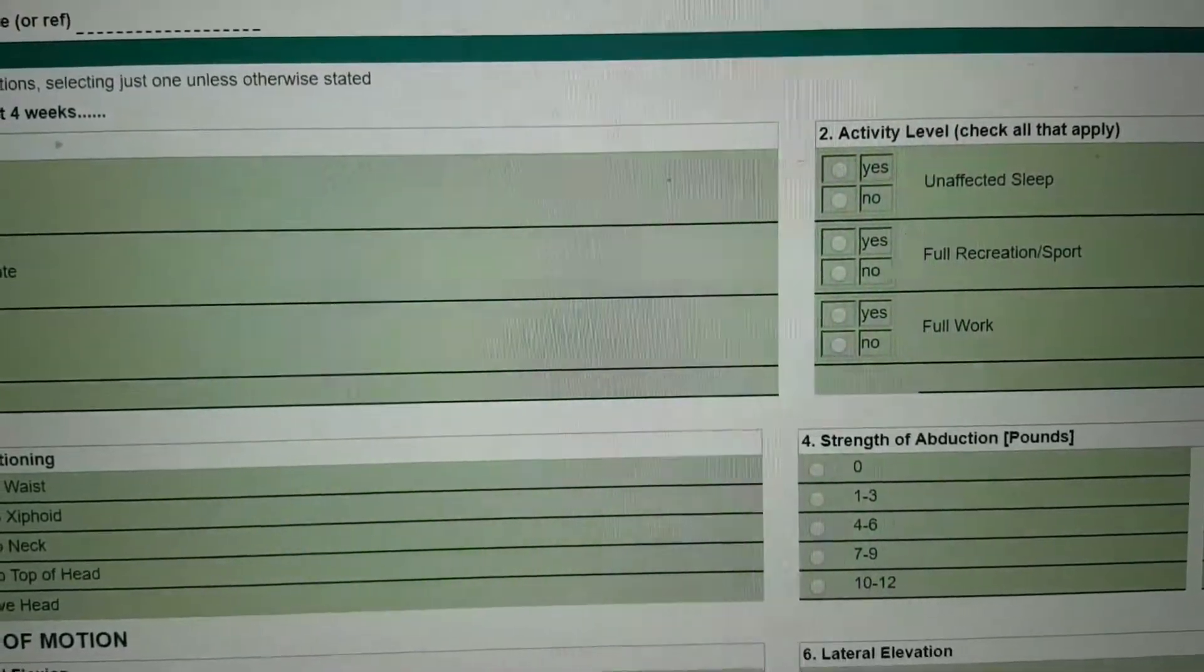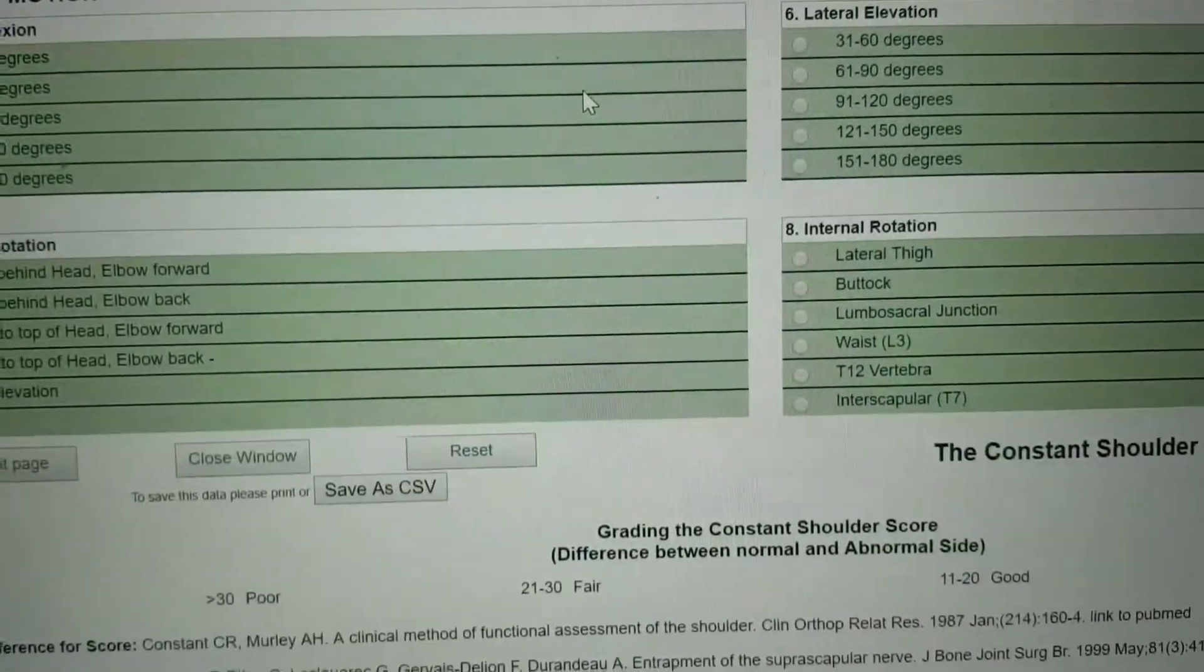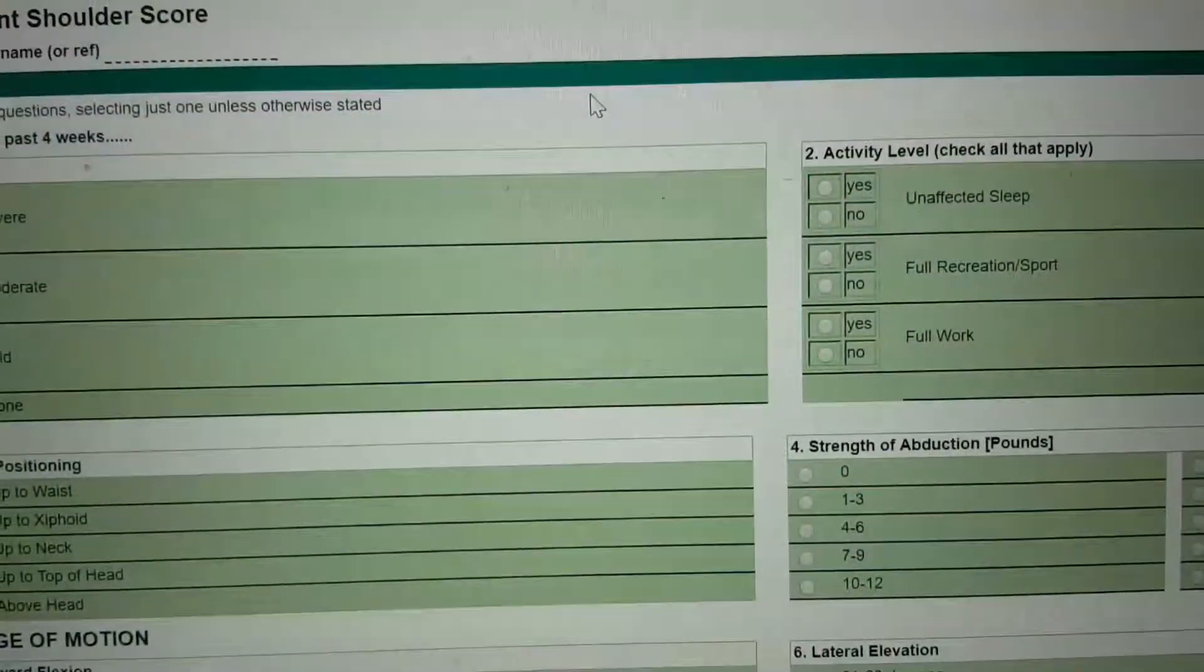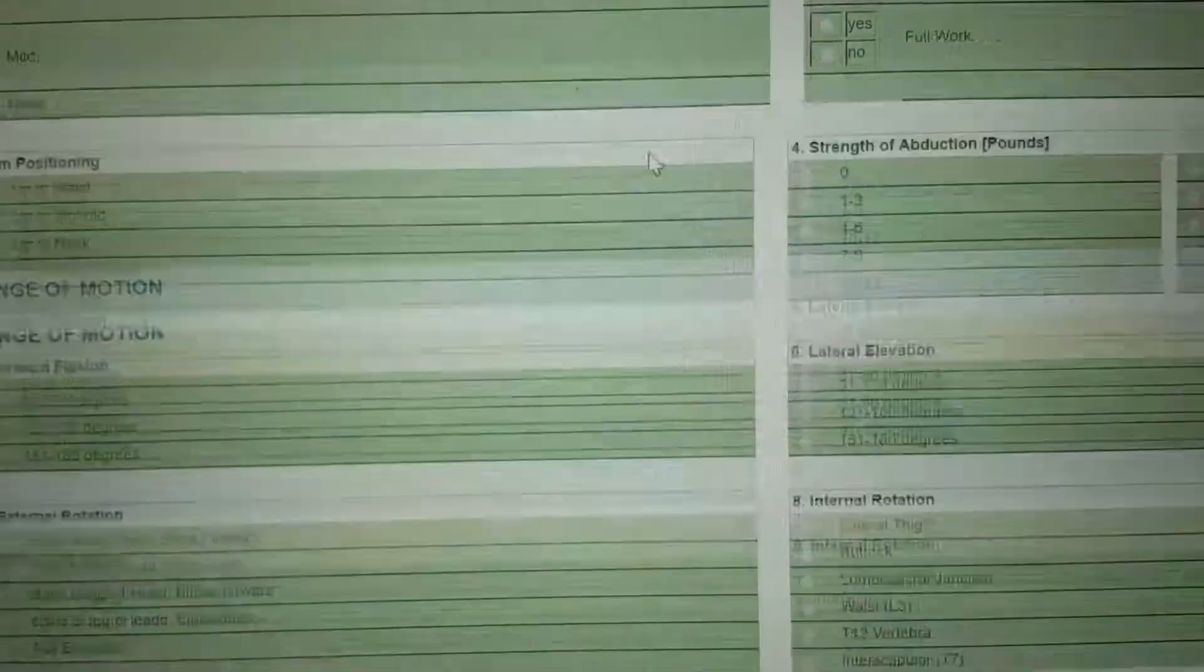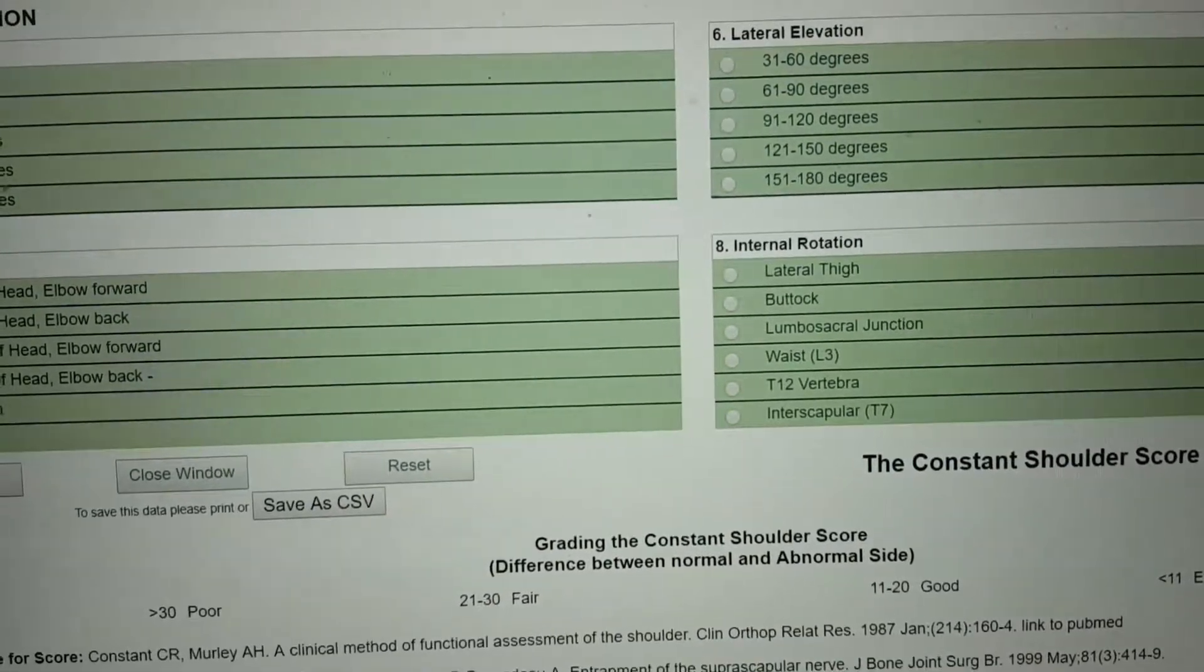The constant shoulder score compares pain and range of motion bilaterally between the injured and uninjured shoulders. Have the patient fill these out and then at the bottom it will give a score. The score is then compared to the uninjured side.